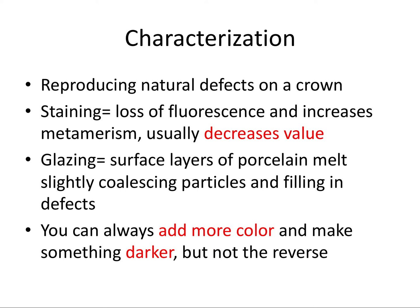Characterization refers to reproducing natural defects on a crown. A natural tooth isn't just one blank shade of white — it has characteristics and defects we want to reproduce to make a crown appear more natural in the mouth. One way we do that is through staining, which involves applying different color stains to the crown. Staining results in the loss of fluorescence, increases metamerism, and usually decreases value — meaning it makes something darker.